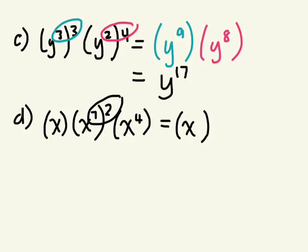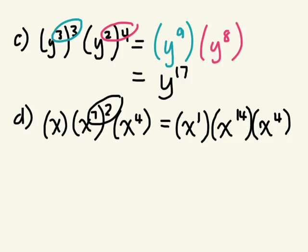Can I put an exponent on that first x? There's no exponent written — what can we write? To the power of 1. Times what's x to the power of 7 to the power of 2? That's x to the power of 14, times x to the power of 4.